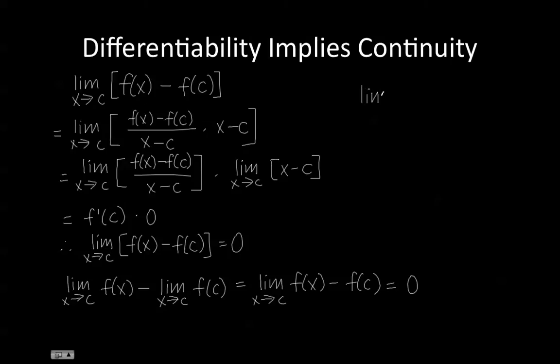And if we add f of c to both sides, we get the limit as x approaches c of f of x is equal to f of c. Therefore, f must be continuous at x equals c as long as f is differentiable at point x equals c.